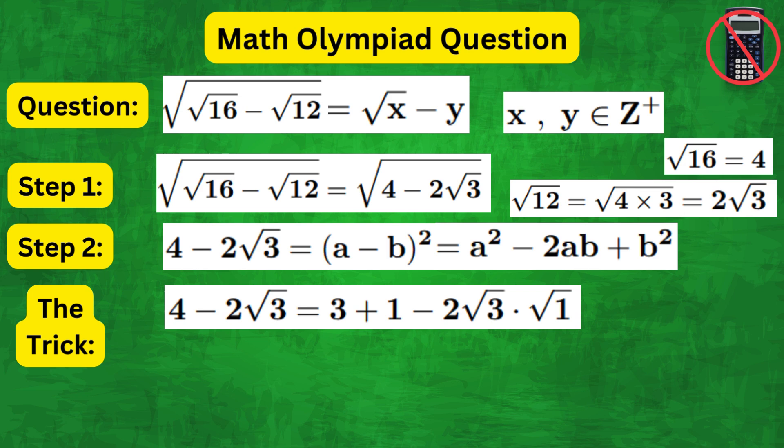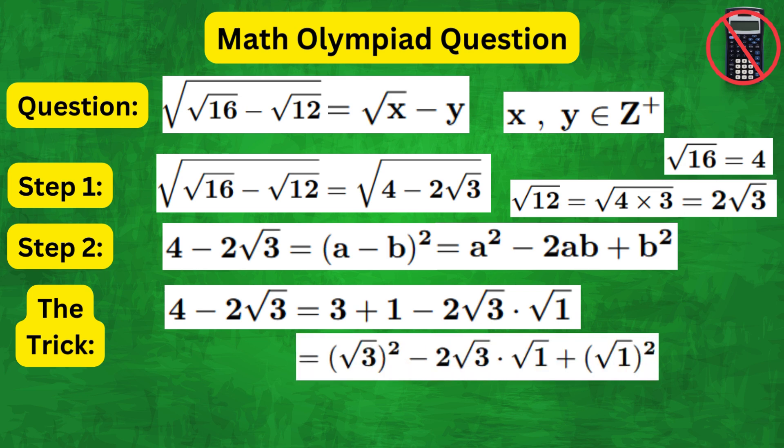Therefore, this can be written as square root of 3 whole squared minus 2 root 3 root 1 plus square root of 1 whole squared.